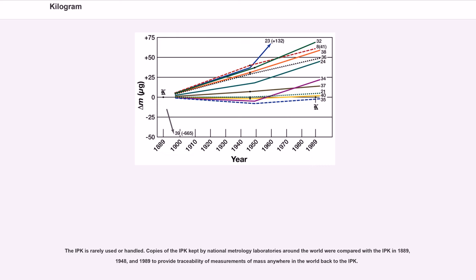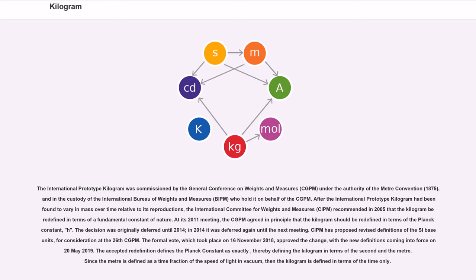The IPK is rarely used or handled. Copies of the IPK kept by National Metrology Laboratories around the world were compared with the IPK in 1889, 1948, and 1989 to provide traceability of measurements of mass anywhere in the world back to the IPK. The International Prototype Kilogram was commissioned by the General Conference on Weights and Measures (CGPM) under the authority of the Meter Convention (1875), and is in the custody of the International Bureau of Weights and Measures (BIPM), who hold it on behalf of the CGPM.